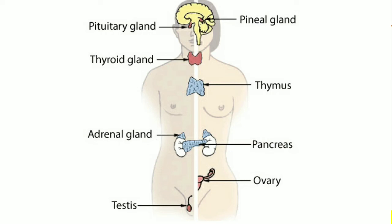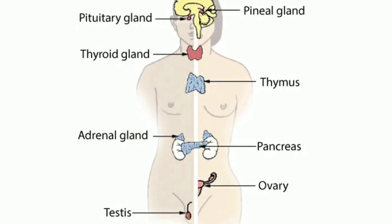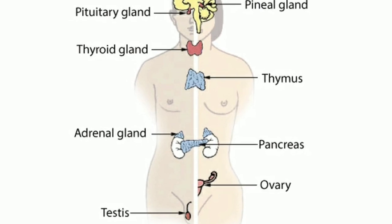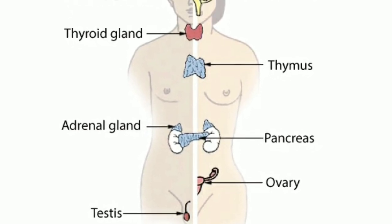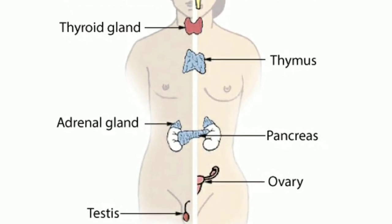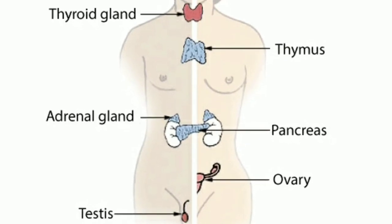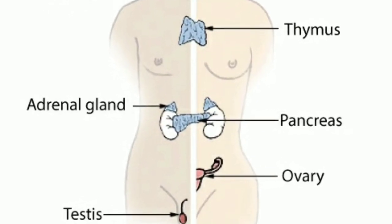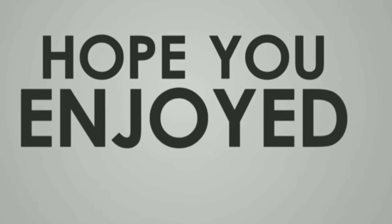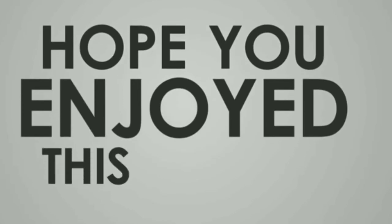In men, the testes make sperm and release the hormone testosterone. This hormone affects sperm production, muscle strength, and sex drive. This was all about the endocrine system. Thank you for watching this video.